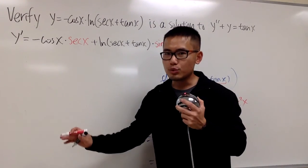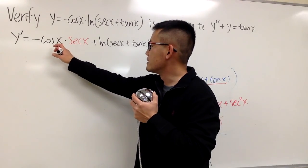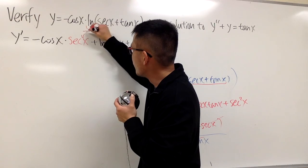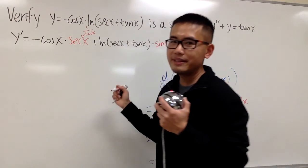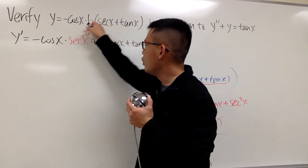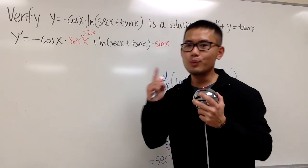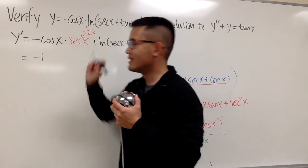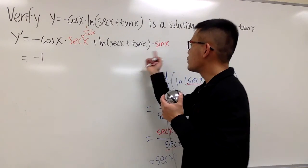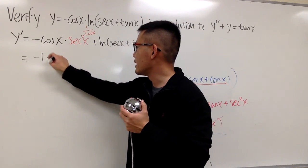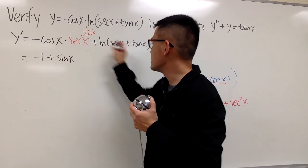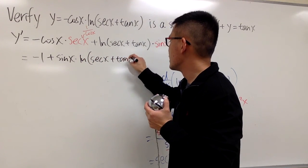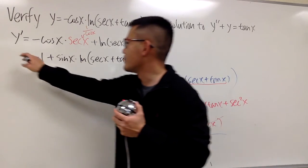Before we do the second derivative, note that cosine x · sec x equals cosine x over cosine x, which is just 1. With the negative in front, this is just negative 1. So the first derivative simplifies to: y' = -1 + sin x · ln(sec x + tan x).